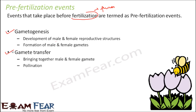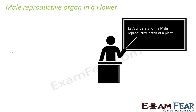In gametogenesis, we will talk about how the male gamete is formed and how the female gamete is formed. First we will try to understand the male reproductive organ of a plant — the androecium, which is made up of stamens. We will understand the structure of each stamen and then see where inside the stamen the male gametes are formed and how.